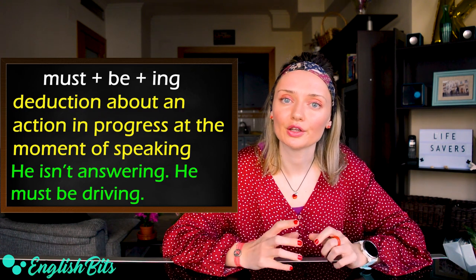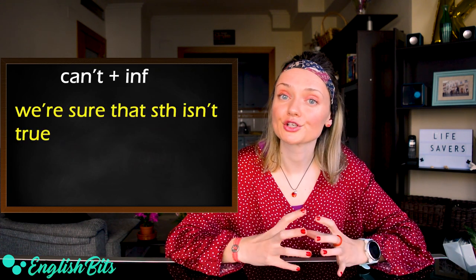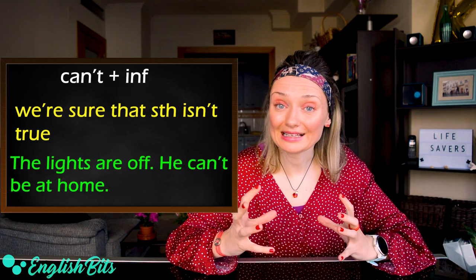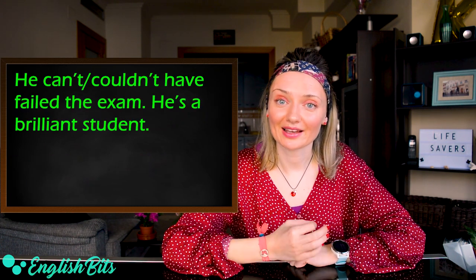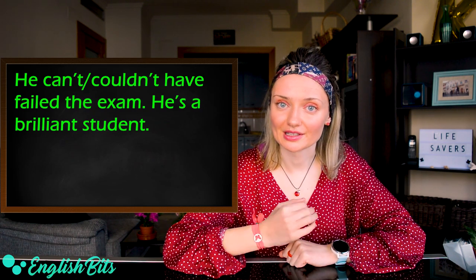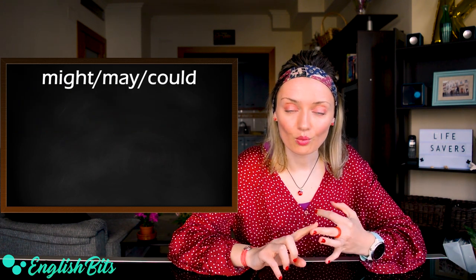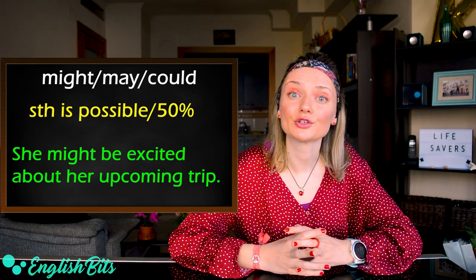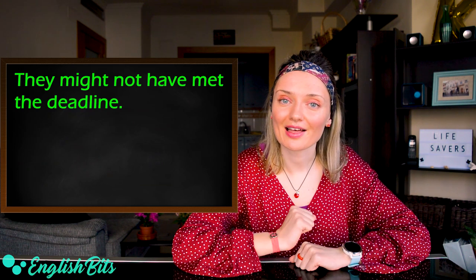Another modal verb that we can use to speculate is 'can't + infinitive.' We use it when we are sure that something isn't true. For example: the lights are off — he can't be at home. And if we talk about the past, we would say: he can't or couldn't have failed the exam — he's a brilliant student. Also we can use modal verbs like might, may, or could when something is possible — around 50%. For example: she might be excited about her upcoming trip. And for the past: they might not have met the deadline.